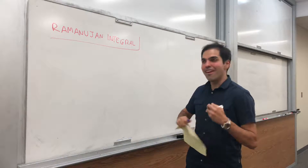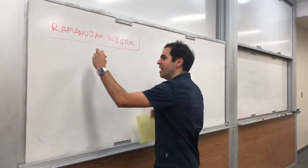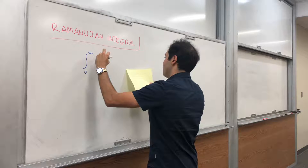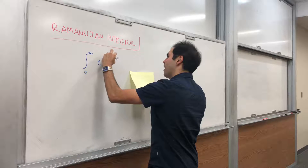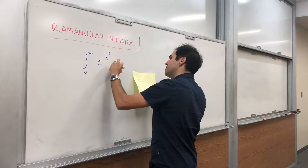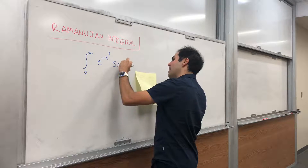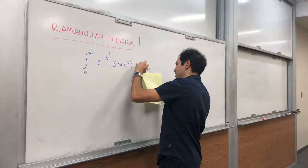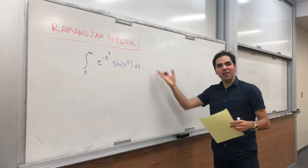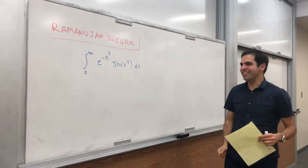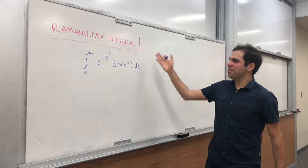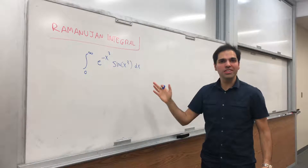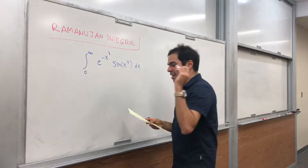So which integral am I evaluating today? This one: the integral from 0 to infinity of e to the minus x cubed times sine of x cubed dx. It's a very complicated integral which we'll be able to solve using a result from Ramanujan.